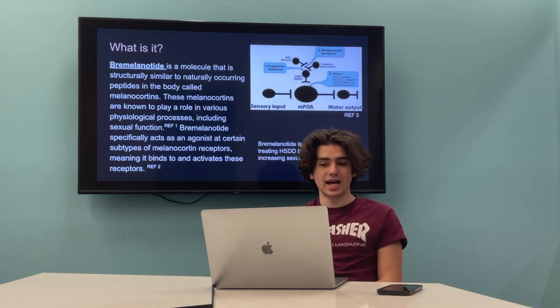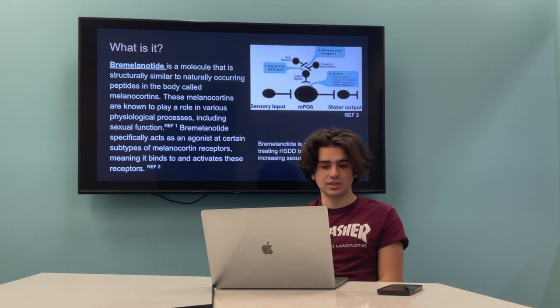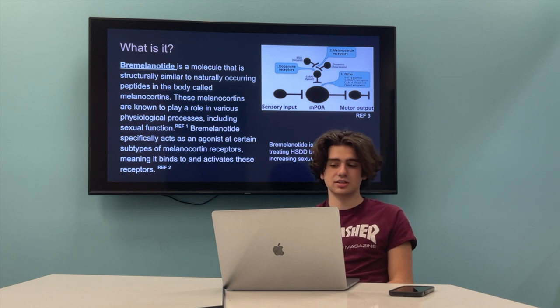Bremelanotide specifically acts as an agonist at certain subtypes of melanocortin receptors, meaning it binds to and activates these receptors. Bremelanotide is a large component in treating HSDD because of its function in increasing sexual desire.